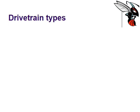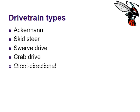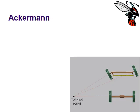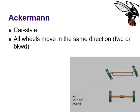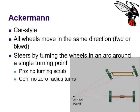There are a few different types of drivetrains we can build in class: the Ackermann, the skid steer, the swerve drive, the crab drive, and the omnidirectional drivetrain. The Ackermann — you might be more familiar with this as the one in your car, a car style. In this drivetrain, all wheels move in the same direction and steer by turning the wheels in an arc around a single turning point. The pro is there's no turning scrub at all, because the rear wheels follow whichever wheels are turning. The con is you cannot do a zero radius turn, and you require more motors.